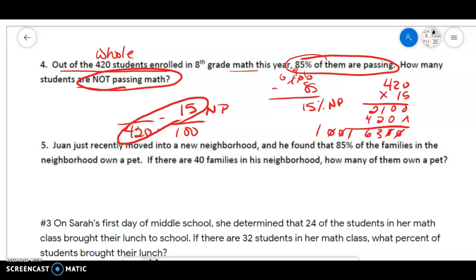So that means that we had 63 students that did not pass. Some of you left your 85 here and you went ahead and you got 357. Well, this is the ones that passed. So if you use the 85 and you got the 357, then you simply needed to take that away from the 420.